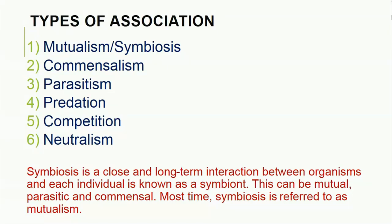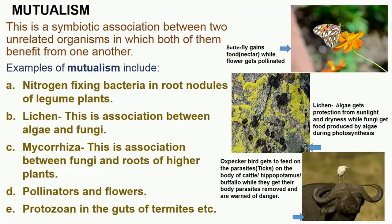Most times symbiosis is referred to as mutualism. The first type of association is mutualism. This is a symbiotic association between two unrelated organisms in which both of them benefit from one another — simply put, it is a give-and-take relationship. Examples of mutualism include nitrogen-fixing bacteria in the root nodules of legume plants. The bacteria fix nitrogen in the root nodules of legume plants such as beans and groundnut plants.